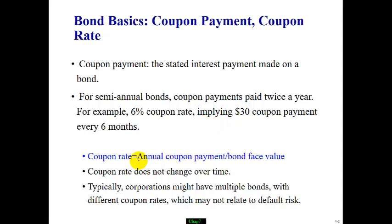Coupon rate is annual coupon payment over bond face value. Please note, coupon rate does not change over time. And for the same corporation, firms could issue multiple bonds with multiple coupon rates. So the coupon rate has nothing to do with the underlying default risk.